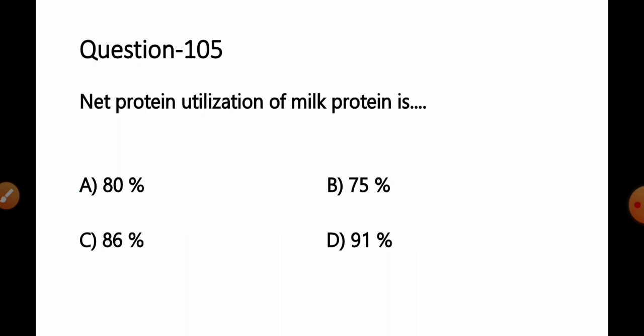Move to the next. Question number 105. Net protein utilization of milk protein is option A. 80%, B. 75%, C. 86%, D. 91%.